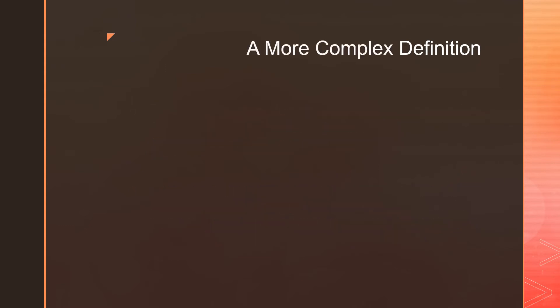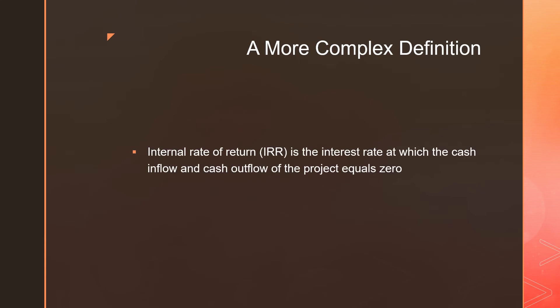Here is a more complex definition of internal rate of return. IRR is the interest rate, or simply the rate, at which the cash inflow and cash outflow of the project equals zero. This definition is still complex and difficult to understand, but what you actually need to understand for the PMP exam is simply this: whichever project gives you a higher rate of return — a higher value — you should select that project.